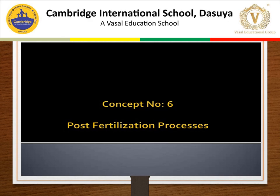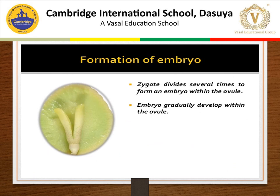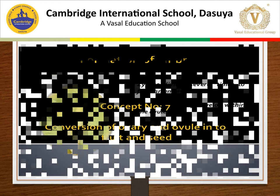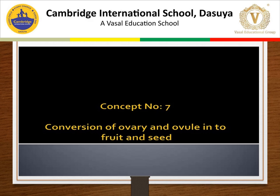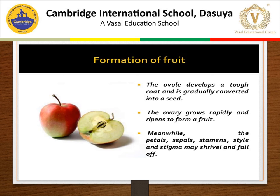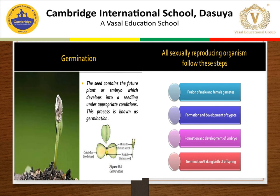What happens after fertilization — post-fertilization changes? Formation of embryo: the zygote divides several times to form an embryo within the ovule, and the embryo gradually develops within the ovule. Then conversion of ovary and ovule into fruit and seed: the ovule develops a tough coat and is converted into a seed. The ovary grows rapidly and ripens to form fruit. Meanwhile, petals, sepals, stamen, style, and stigma wither and fall off. Germination of seed: seeds contain the future plant or embryo which develops into seedlings under appropriate conditions — this process is known as germination. The radicle is the future root and the plumule is the future shoot. Cotyledons help to store food.